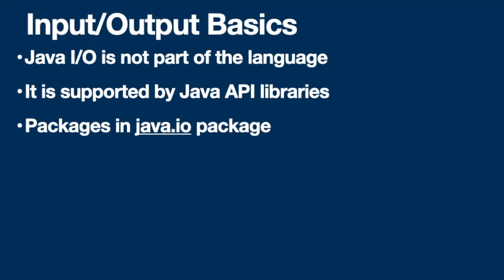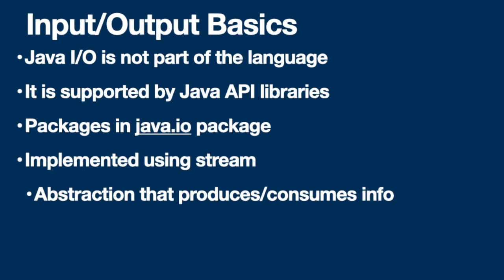The basic concept behind the implementation of input/output is the stream abstraction. When we say abstraction, we mean the construct or concept used in packaging or developing the implementation of Java I/O. This abstraction is used to produce or consume information. Consuming means taking information into the currently executing program, and producing means generating output after processing data or input.